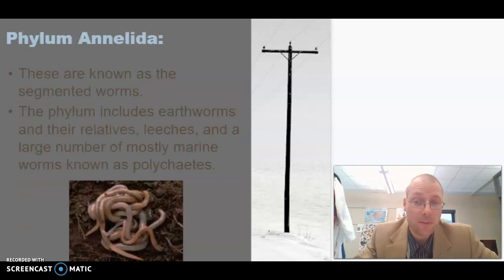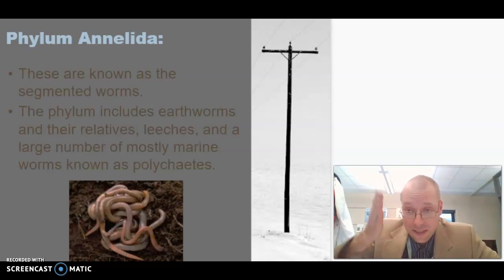Next, we get to the things you think of as worms, the annelids. Phylum annelida, the annelids. They're also called the segmented worm because their body has little sections on it. If you look at an earthworm, you can see all those little sections on them. So the annelids include the earthworms and their relatives, the leeches, as well as a large number of marine worms called polychaetes. And some polychaetes don't even look like worms because you see their gills, brightly colored gills.